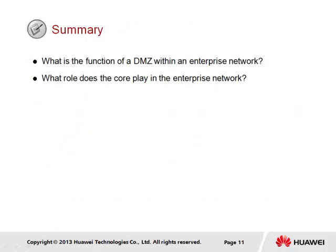In summary of this section, we have a couple of questions. First: what is the function of a DMZ within an enterprise network? The DMZ represents a neutral zone of the enterprise that allows both internal and external entities to access certain applications and resources, whilst also ensuring the enterprise network does not permit external entities access to the internal network. What role does the core play in the enterprise network? The core network is concerned solely with high-speed forwarding of traffic between the subdomains of the network, and is generally supported by high-end devices that support high-speed switching.